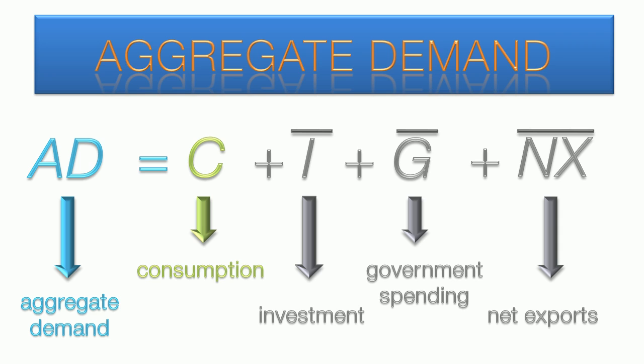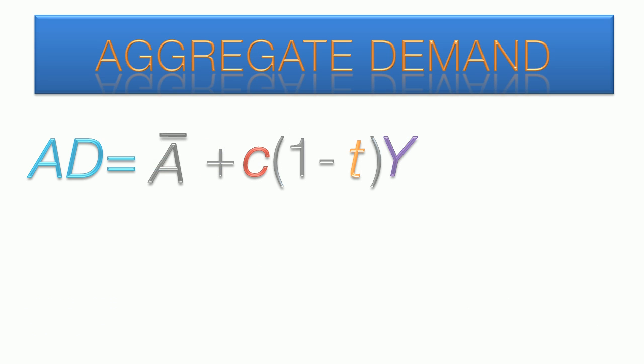Now we're going to incorporate this investment function into the aggregate demand equation. Recall the first video where we separated the components into exogenous and endogenous to arrive at this formula. Investment was previously grouped with the exogenous components, but our new formula has endogenous as well as exogenous components. The I-bar will go back into the exogenous group, while the interest and sensitivity coefficient will move to the back of the equation.